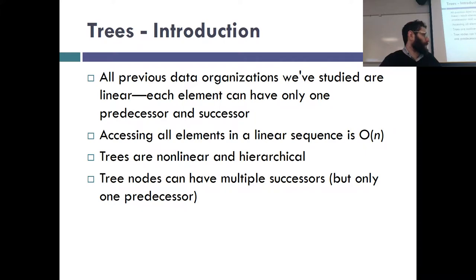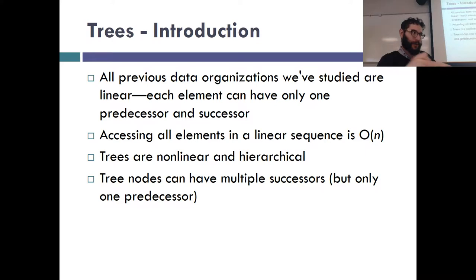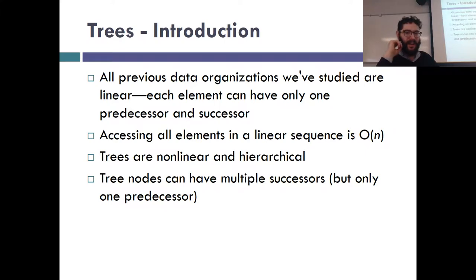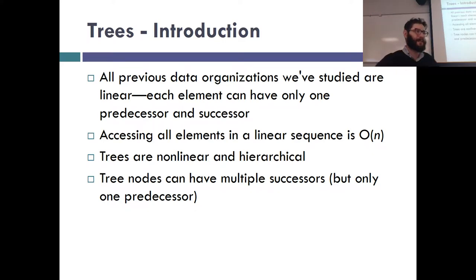All the data structures we've been dealing with so far are lists — they're linear. Every element has the items before them and after them. So if you want to find something in a list, you have to go through the list in linear time. Trees are nonlinear, meaning they're not stored in a straight line. They're hierarchical, meaning we treat something in the tree more importantly than something else.